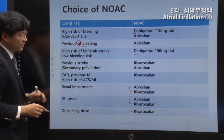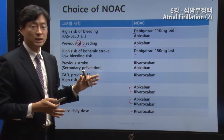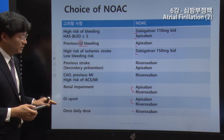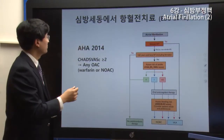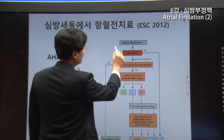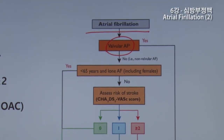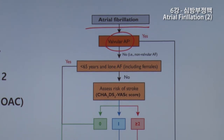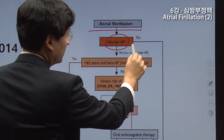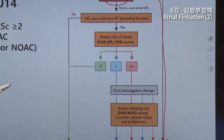Apixaban and Dabigatran are used twice daily, whereas Rivaroxaban is used once daily. We generally prefer to use Apixaban. However, if there is mitral stenosis, NOACs are not used. If there is mitral stenosis, you should use Warfarin — a Vitamin K antagonist.